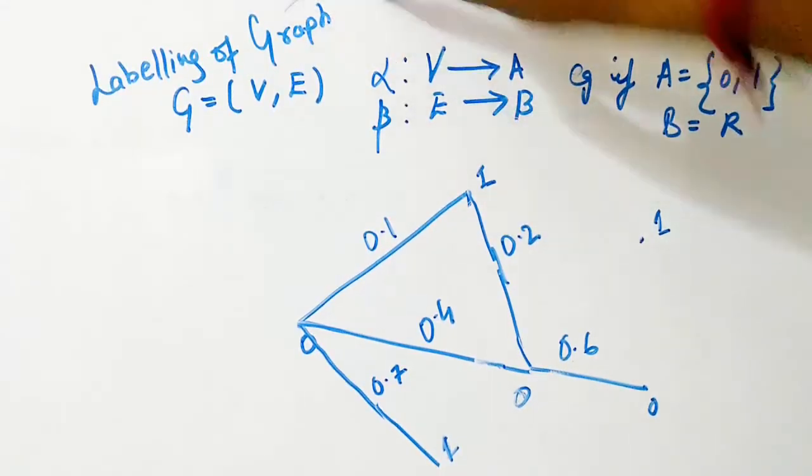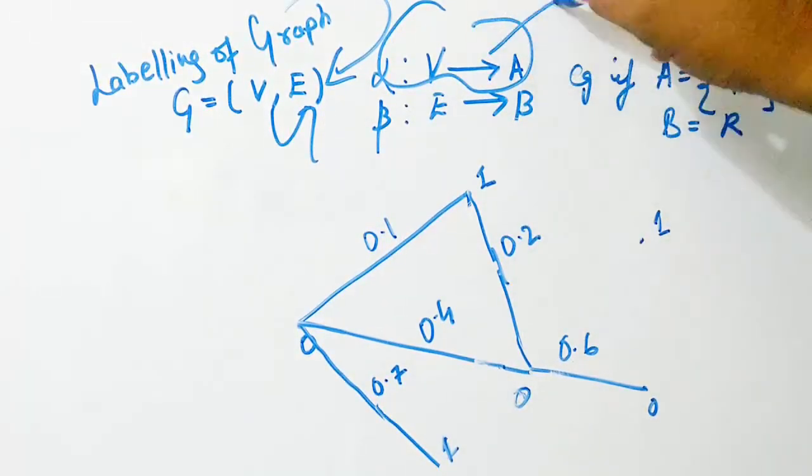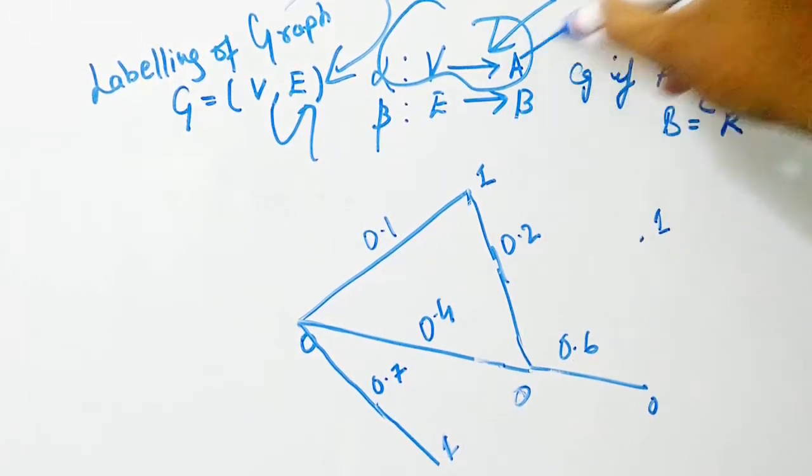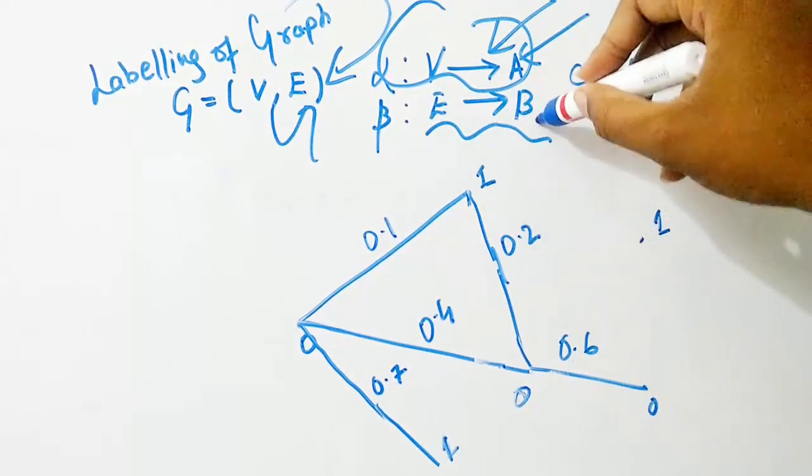Labeling of graphs: suppose there is a graph with V vertices and E edges. Then the vertices can be labeled as it tends to with A set, and the edges can be labeled with the B set.